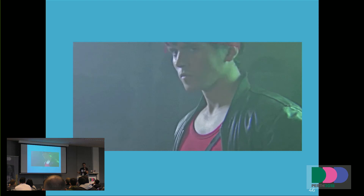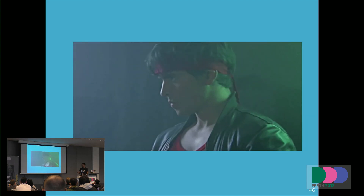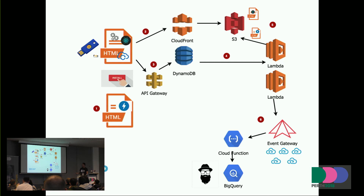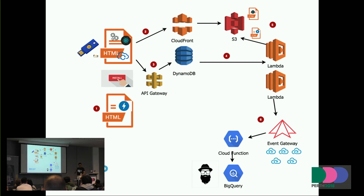So are we ready to build a cloud-native progressive web app serverlessly? Your typical application has a landing page written in AMP that installs your service worker in the background. When you go to the app, everything displays immediately because everything is cached. The user only needs their fingerprint or USB key to log in. Dynamic content is stored in DynamoDB, static content in S3. Every time a user makes a change in DynamoDB, it streams events that Lambda forwards to Event Gateway, which forwards to Google Cloud Functions and stores events in BigQuery — so your data scientists can analyze it using a different cloud provider. Thank you.